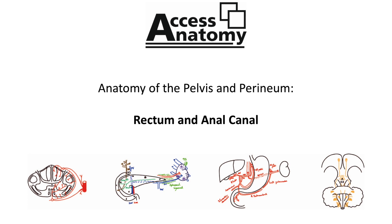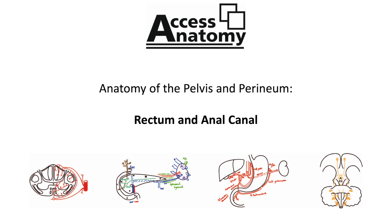Before detailing the blood and nerve supply of the rectum, it is worth describing the relations of the rectum in situ. Directly posterior to the rectum are the inferior sacral vertebrae, the coccyx, and the anococcygeal body of the pelvic floor. In males, anterior to the rectum is the bladder base, the seminal vesicles, the ductus deferens, and the prostate, whilst in the female, anterior to the rectum is the vagina. The rectum is supplied by three rectal arteries.